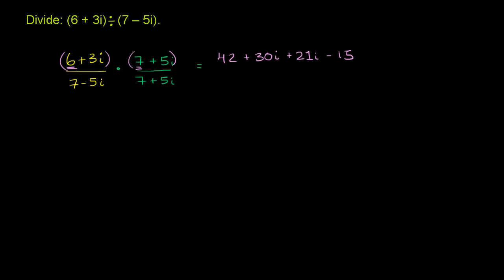And then our denominator is going to be, well, we have a plus b times a minus b. You could think of it that way. Or you could just do what we just did up here. Actually, let's just do what we did up here, so you don't have to remember that difference of squares pattern. 7 times 7 is 49.